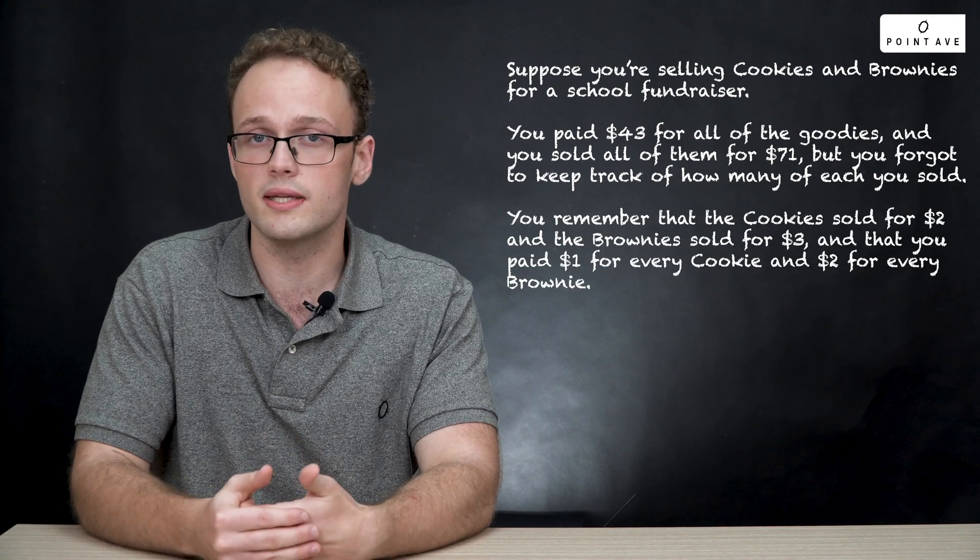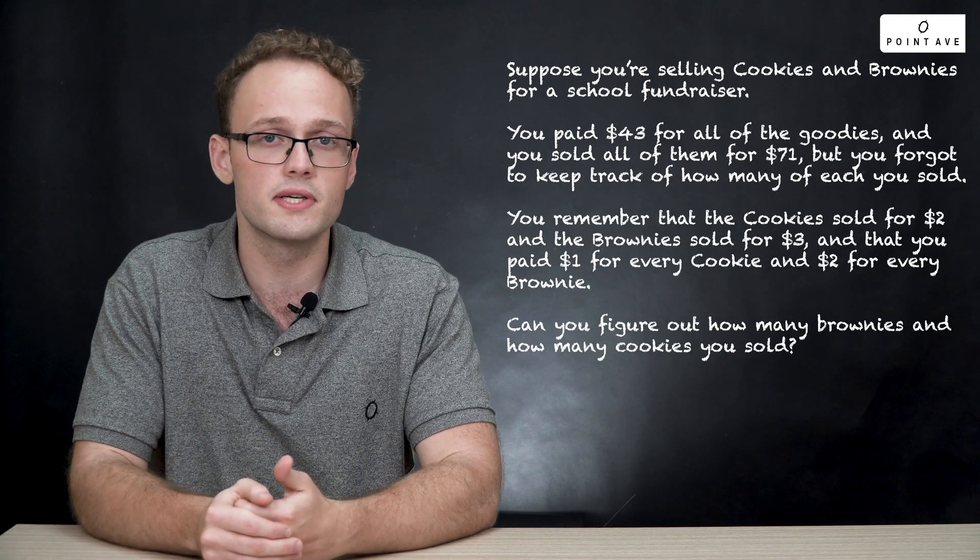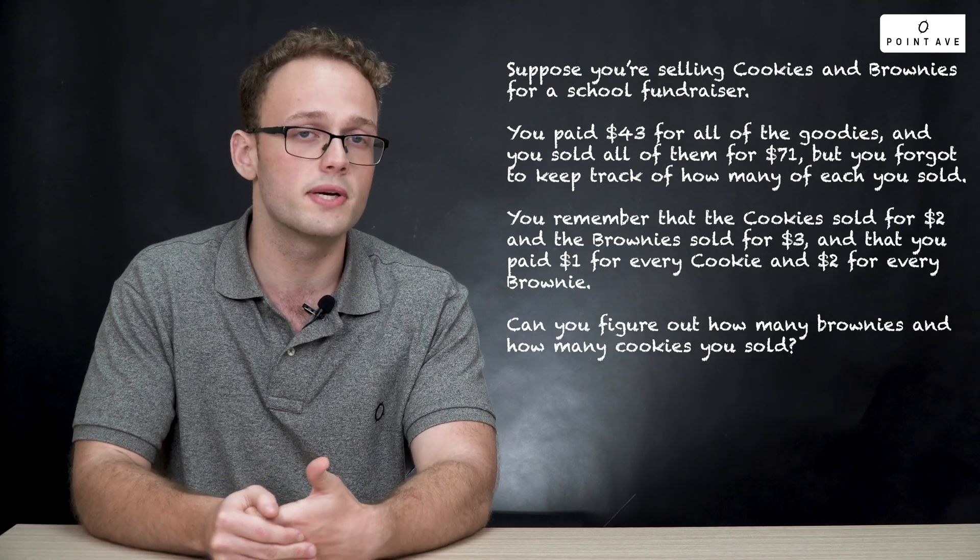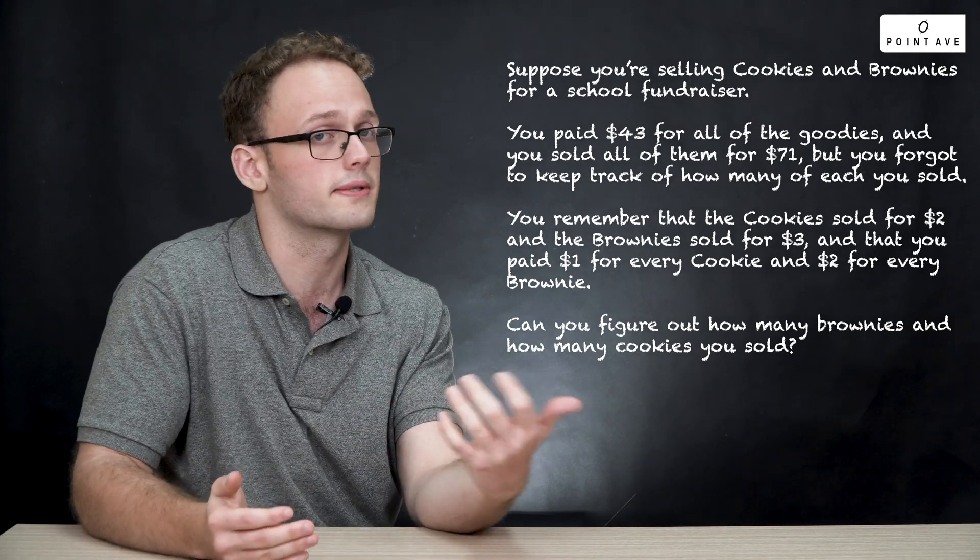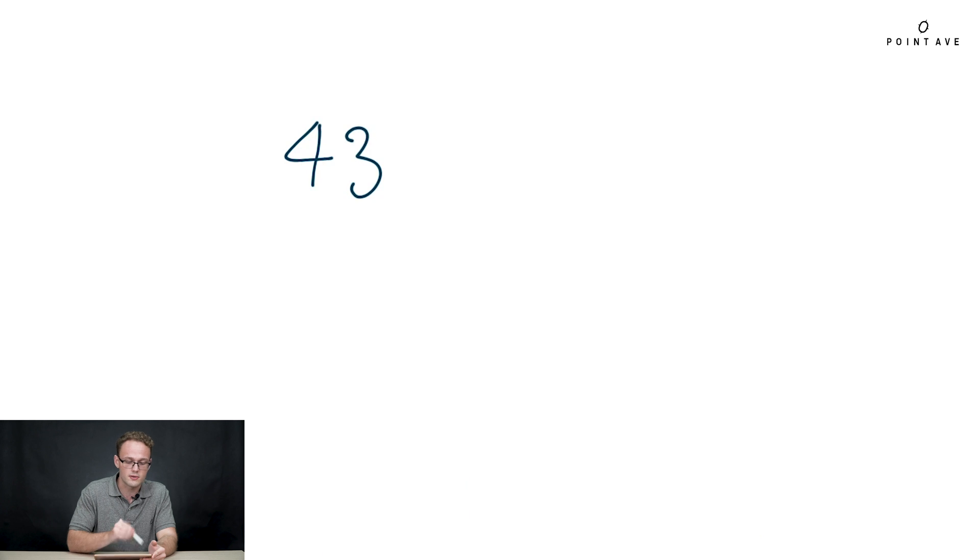We're going to do this a little bit quickly, but if you feel a little bit confused you can watch our other video on creating equations for word problems. We know that we paid $43 in total, and from that $43 we paid $2 for every brownie, so that gives us 2B, and $1 for every cookie, so that gives us C.